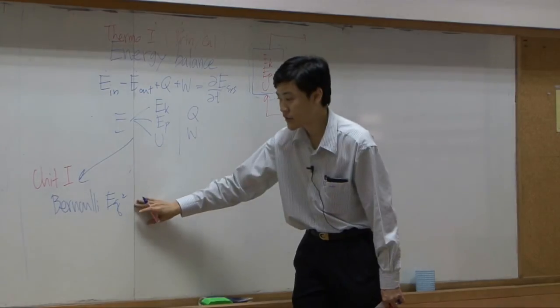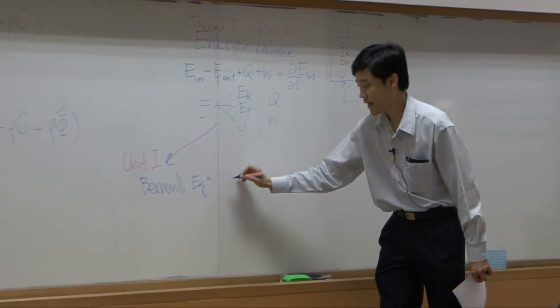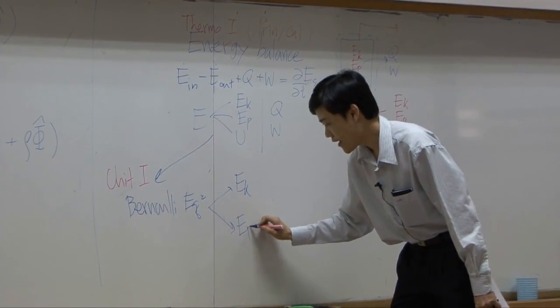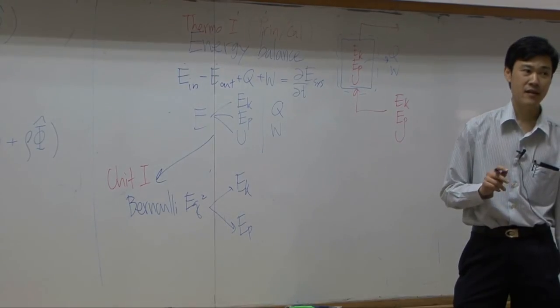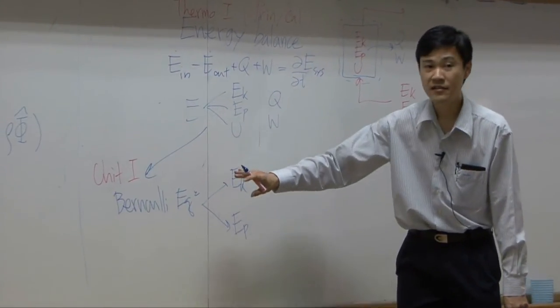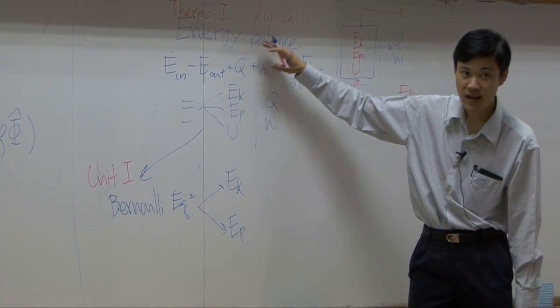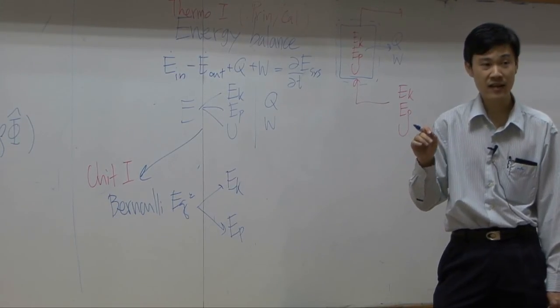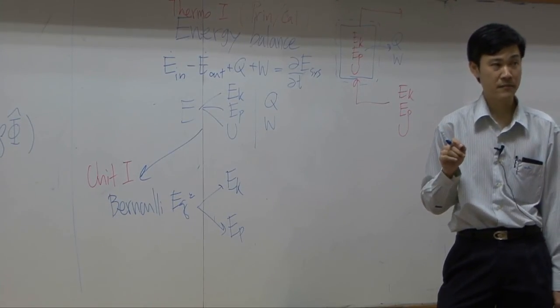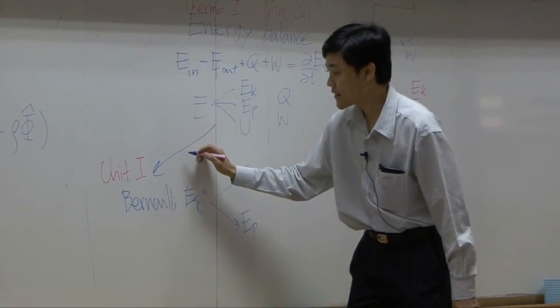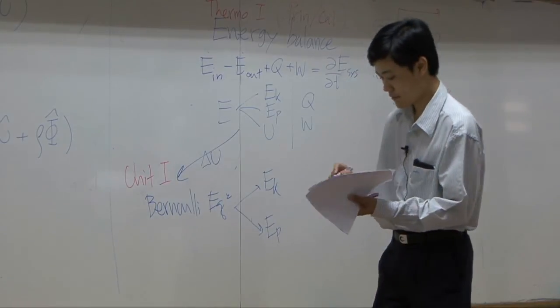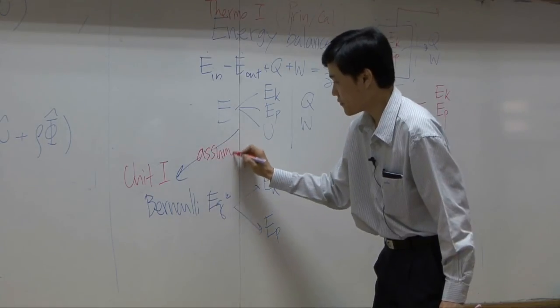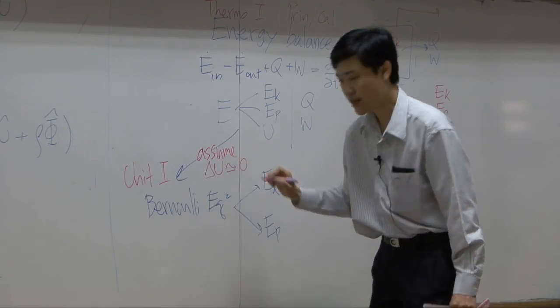That's because Bernoulli equation considers only kinetic energy and potential energy. The Bernoulli equation is derived from energy balance under assumption that the system has no significant change in internal energy. So, if you assume that delta U here, if you assume that delta U is approximately zero, there is no significant change in internal energy.